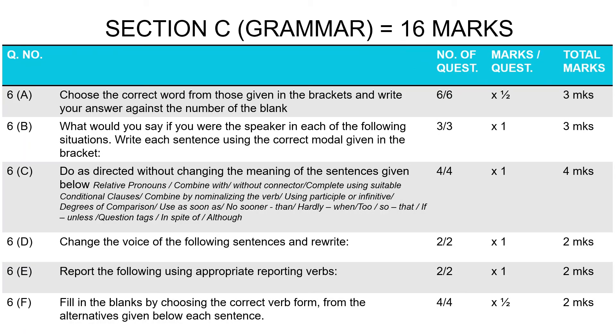Section C is your grammar section, carrying 16 marks. This entire question six is distributed for grammar. Your 6A is gap filling where you choose the correct word from those given in the brackets. It is an MCQ kind of question. You have to fill up with the word which is most suitable—this is your gap filling exercise. Six blanks, half mark each, gives you three. 6B is modals. You are given a situation; you have to act as if you were the speaker there and frame a suitable sentence using an appropriate modal. The modal is not any modal that you want to write—you are given a couple of modals in the bracket. You have to pick up the most appropriate one and frame a sentence using that one only. Three questions there, one mark each, three.